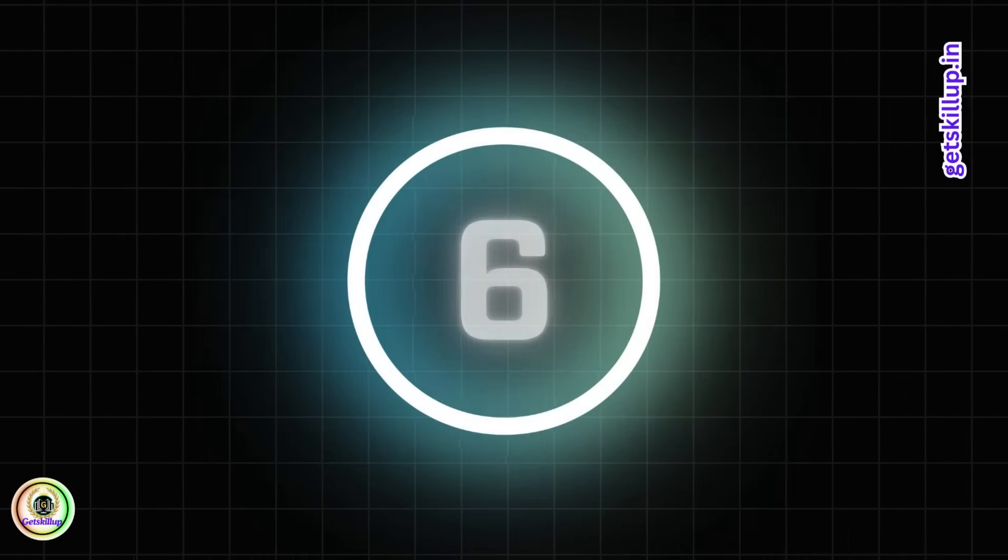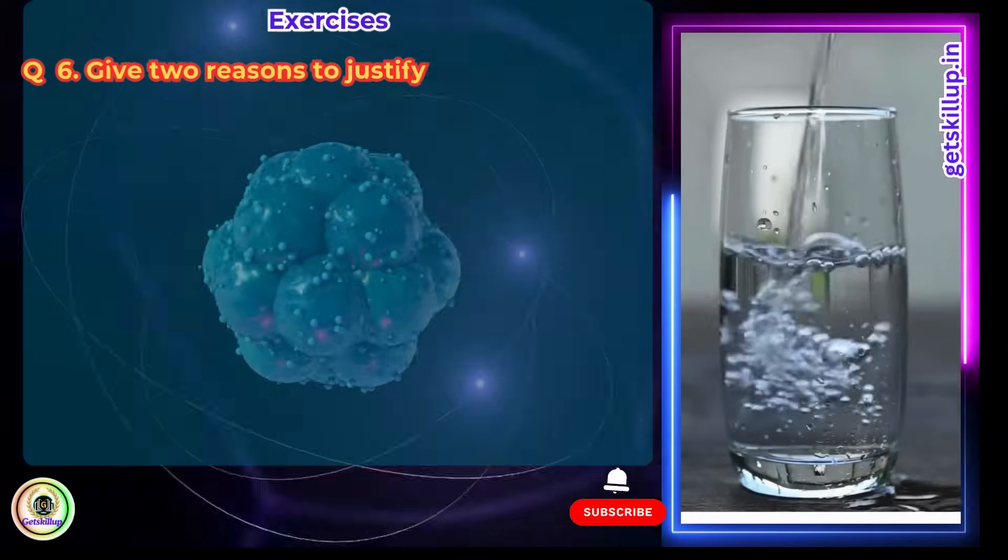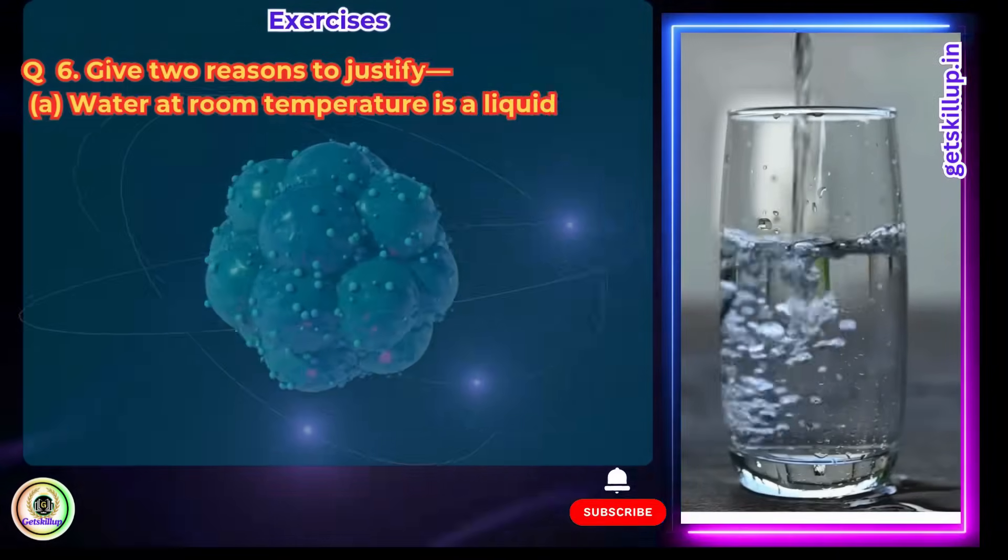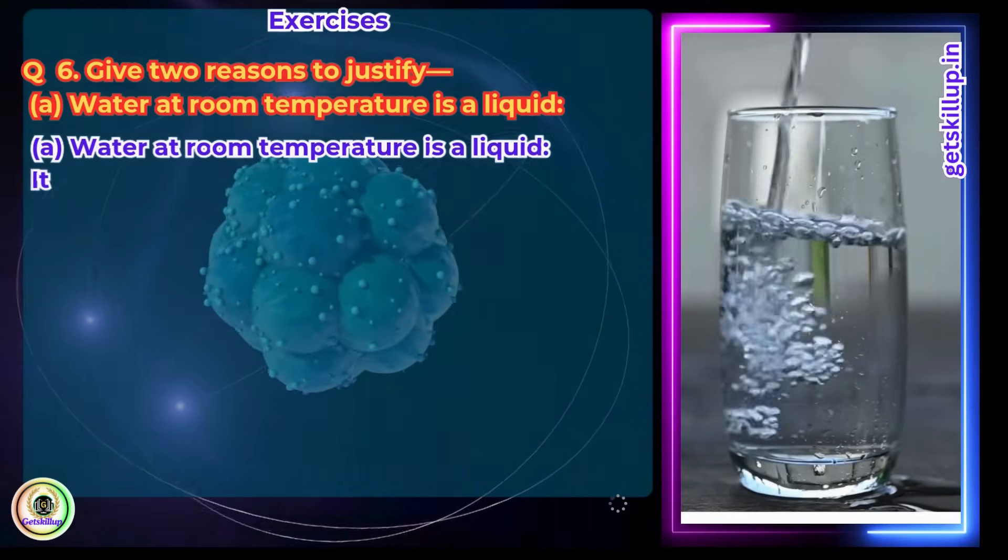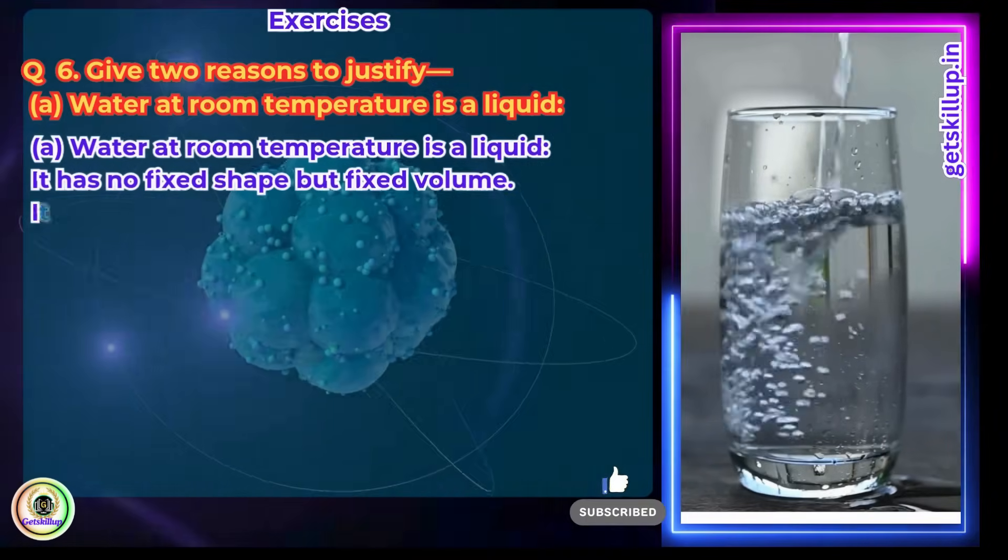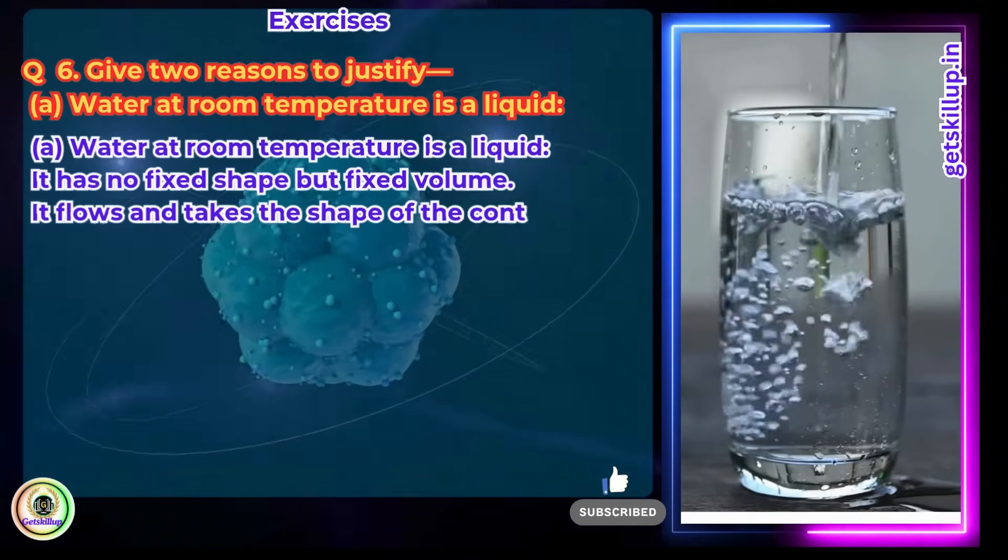Question 6: Give two reasons to justify. a. Water at room temperature is a liquid. Answer: It has no fixed shape, but fixed volume. It flows and takes the shape of the container.